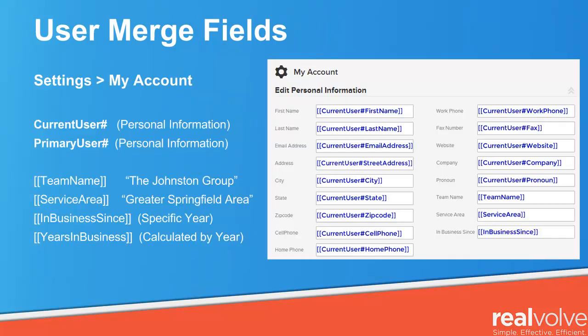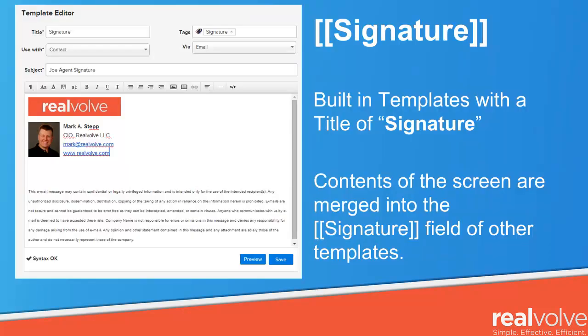If you go into the Settings My Account section, you will see the Edit Personal Information. These have special merge fields used within the template that identify your personal information — typically the current user, but it can also contain the primary user. Only the primary user can type in the team name, service area, in business since, which is a specific year, and the years in business are calculated off of that in business since year. The Signature merge field is a built-in template with the title of Signature. Anytime the contents of that screen use the word Signature, it fills in with whatever is in the template called Signature.